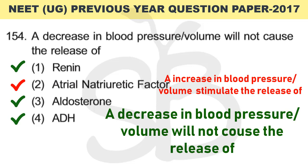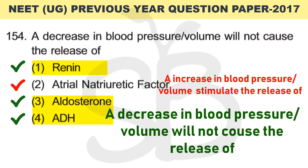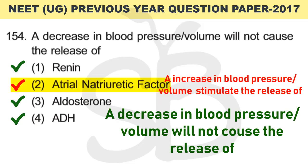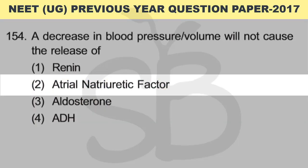So, when blood pressure and volume decrease, it will NOT cause the release of atrial natriuretic factor — because ANF is released when blood pressure increases, not decreases. Therefore, the correct answer is option 2: atrial natriuretic factor.